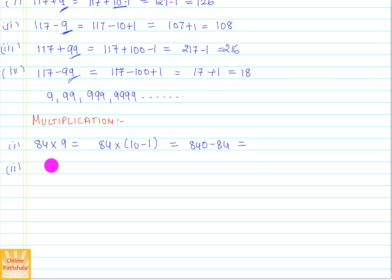So this equals 840 minus 84, and you can solve this to get the final answer. The other one would be 84 into 99. Now this becomes 84 into 100 minus 1, which will be 8400 minus 84, and you can calculate the answer here.